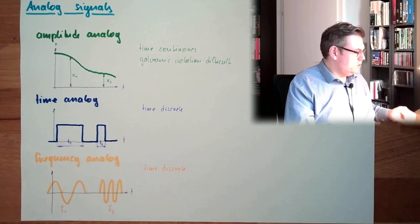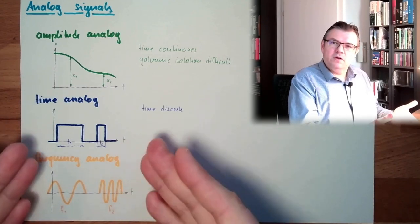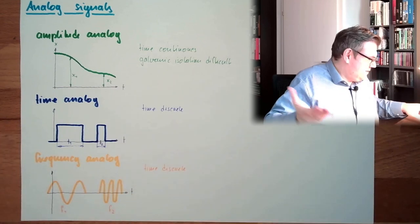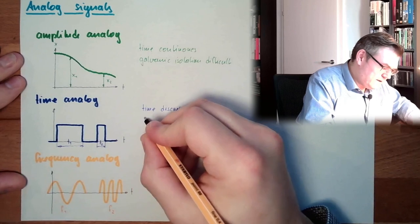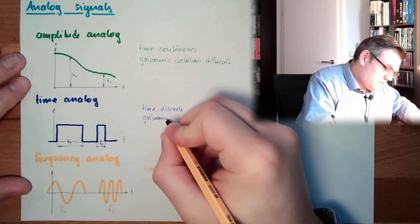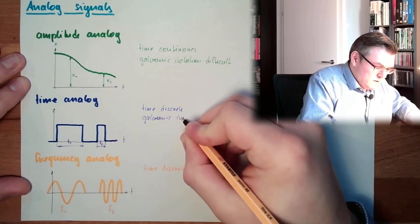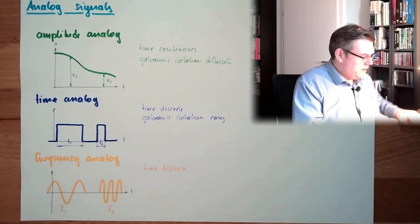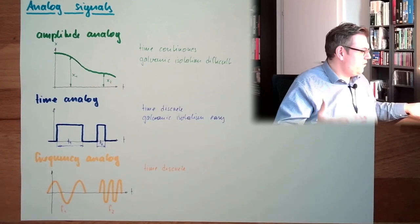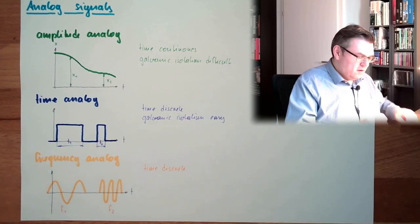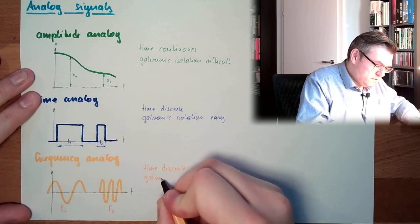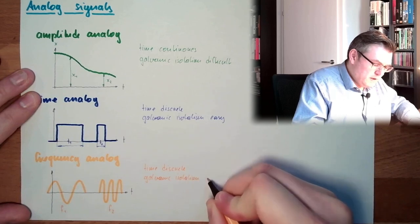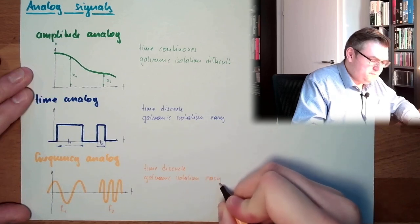Here, this is easy. Let's think about an optical change. If I turn on and off a lamp, it's very easy. Galvanic isolation is easy. And also here, where I said, transferring an AC current is working. Also here galvanic isolation is further easy.